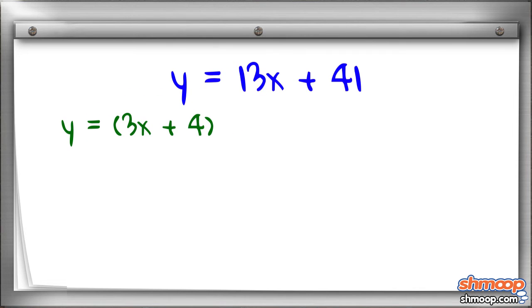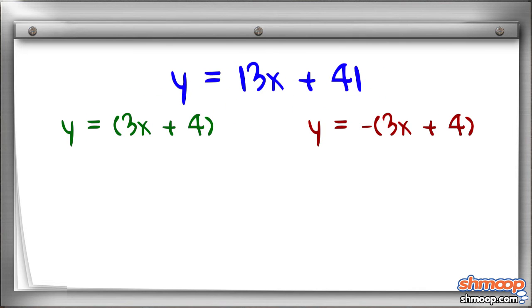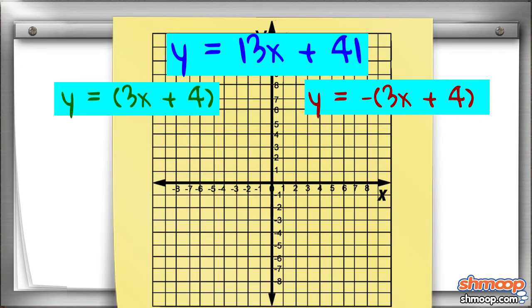Let's say we have the equation y equals the absolute value of 3x plus 4. Before we make the stuff inside the absolute value bars positive, it can be either positive or negative. We don't know which, so let's write both. We can graph both these lines using their slopes and y-intercepts and see what we get.